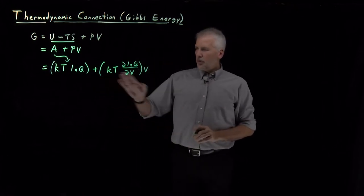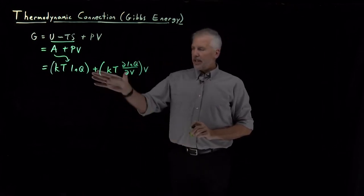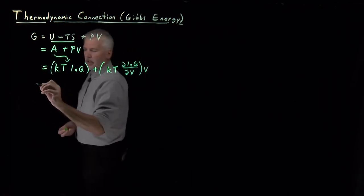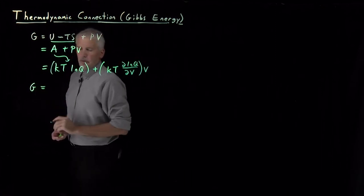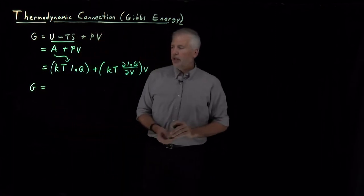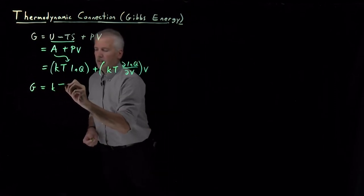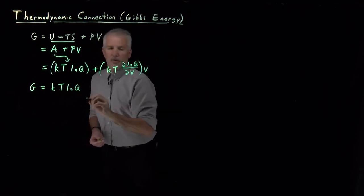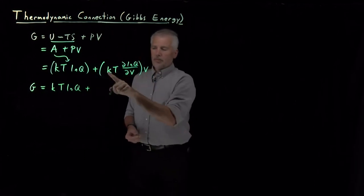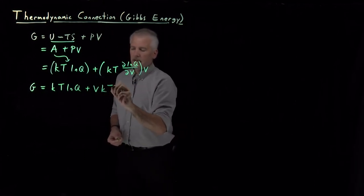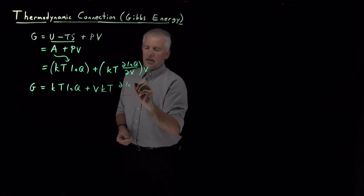There's no cancellation that happens here. We just add these two terms together. So the thermodynamic connection formula for the Gibbs free energy is KT log Q plus volume times KT times d log Q dV.